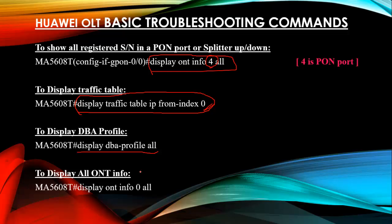To display all ONT info on a GPON board, use 'display ont info 0 all' — where 0 is your board/card number. This shows all ONTs on the GPON card, and you can see an overall view of all ONTs on all PON ports of that board.